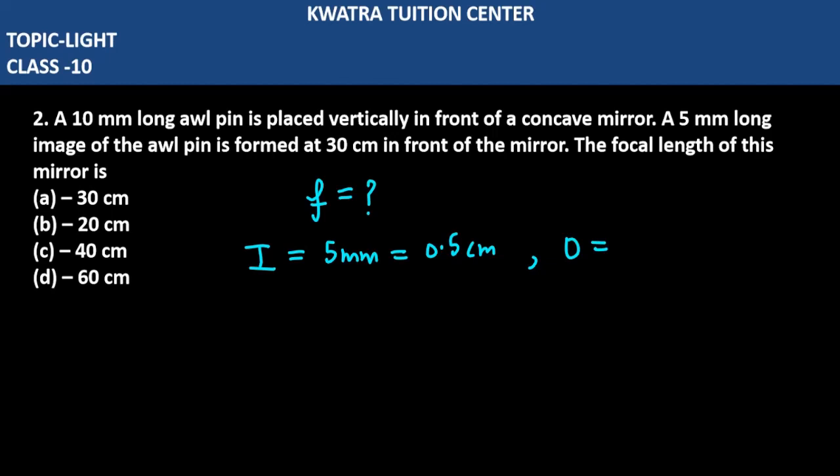Object will be 10 mm. What does 10 mm mean? You have to divide it by 10 again so that you can get the value in cm. So it will be 1 cm object height. Now you can see the image distance is there as well, which is denoted by V. How much will it be here? It says that it is in front of the mirror, which means this side will be minus 30 cm.